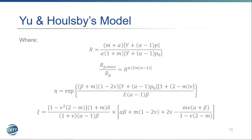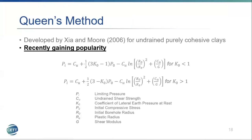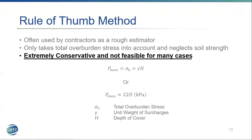Queen's method was developed by CIMR in 2006 and is gaining popularity, especially for undrained purely cohesive clays. The rule of thumb method is a rough estimate used by contractors that only considers total overburden stress, neglecting shear strength, resulting in an extremely conservative value not feasible for many cases. The value of 22 simply represents 22 kilonewtons per kilometer of soil, making it a very rough estimate.